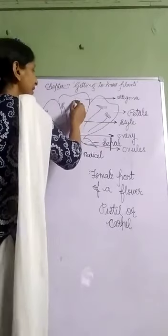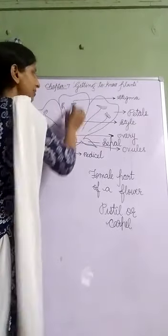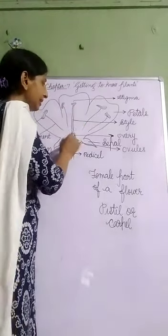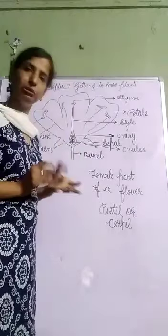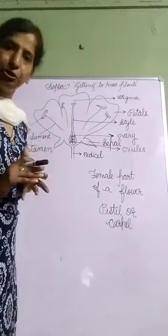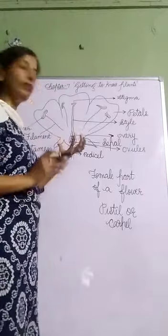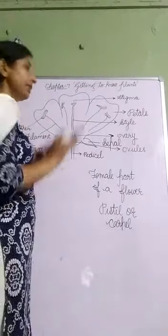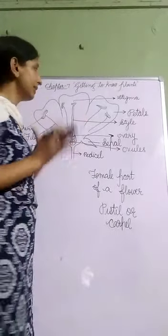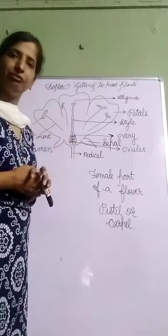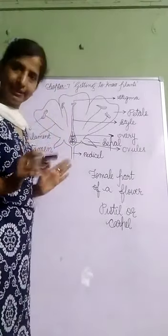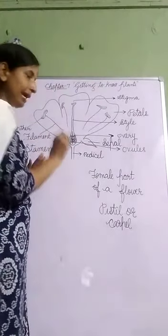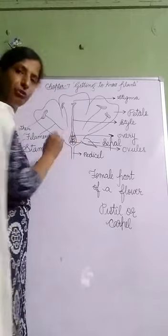The female part has three main parts: stigma, style, and ovary. Inside the ovary there are tiny bead-like structures called ovules. When ovules mature, they form seeds. And when the ovary gets mature and ripens, it forms a fruit. So female part is called pistil, with three parts — stigma, style, and ovary — and inside the ovary there are tiny ovules.